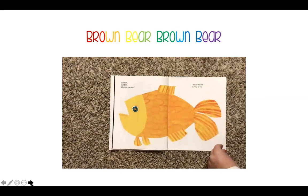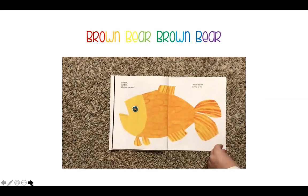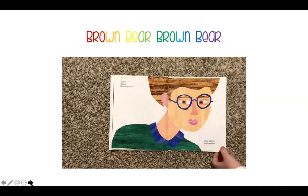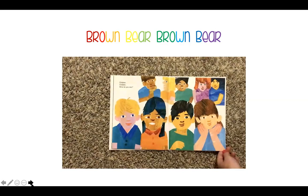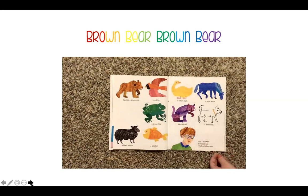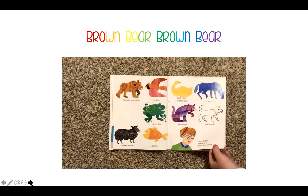Goldfish, goldfish, what do you see? I see a teacher looking at me. Teacher, teacher, what do you see? I see children looking at me. Children, children, what do you see? We see a brown bear, a red bird, a yellow duck, a blue horse, a green frog, a purple cat, a white dog, a black sheep, a goldfish, and a teacher looking at us. That's what we see. The end.